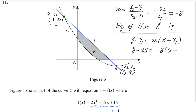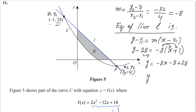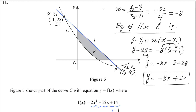Plugging in the values: y - 28 = -8(x - (-1)), which simplifies to y - 28 = -8(x + 1). Expanding: y = -8x - 8 + 28, so y = -8x + 20. This is the equation of line L.